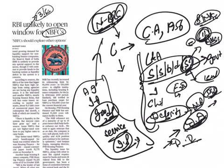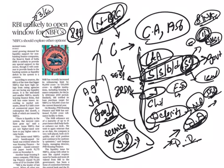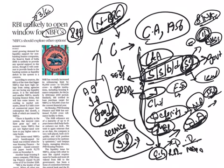NBFCs are regulated by multiple regulators, whereas banks are regulated only by one authority: the Reserve Bank of India. NBFCs are of different types and involved in various sectors. If it is an insurance company, it is regulated by the Insurance Regulatory and Development Authority (IRDAI). If it is a merchant bank, it is regulated by SEBI - the Securities and Exchange Board of India. If it is a microfinance institution, which lends to MSMEs, it is regulated by the state government, RBI, and NABARD. So they have different regulators, whereas a bank has only one regulator: the Reserve Bank of India.